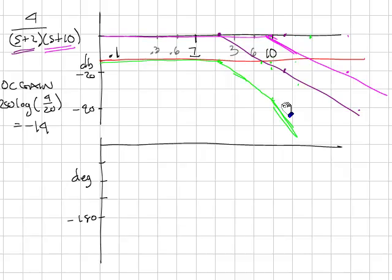Next, let's do the phase curve. The phase curve we have a pole at 2. The pole at 2 has a total slope of minus 45 stretched over 2 decades. So the phase curve will do something like that. Total phase of 90 degrees with 45 at the pole location.